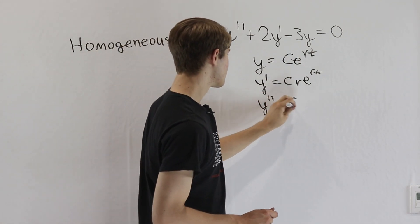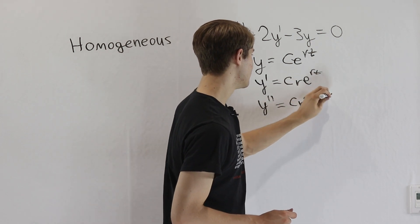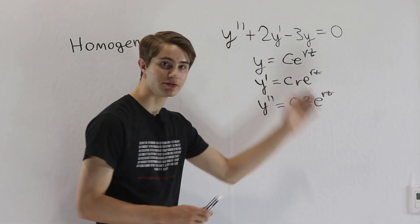If we differentiate again, we're just going to get c times r squared, e to the rt. We just keep differentiating all the way down.